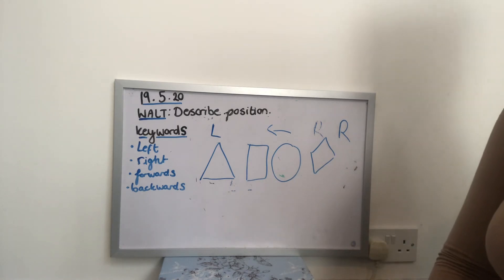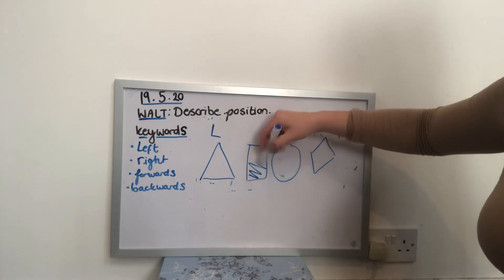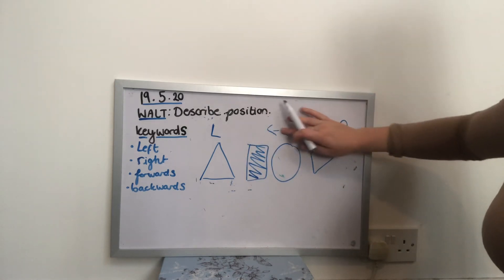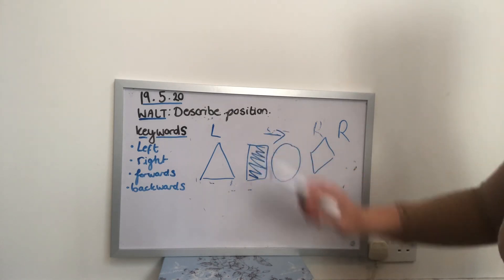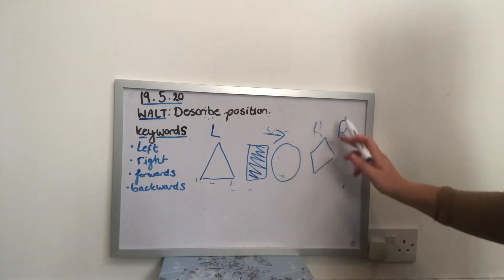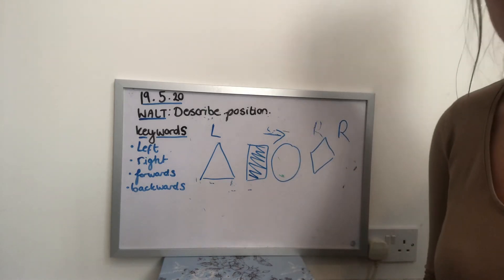Okay, I now want to know what's on the right of the rectangle. On the right of the rectangle. So I know that the right is this way. So on the right of my rectangle, I've got a circle and a diamond. Fantastic.